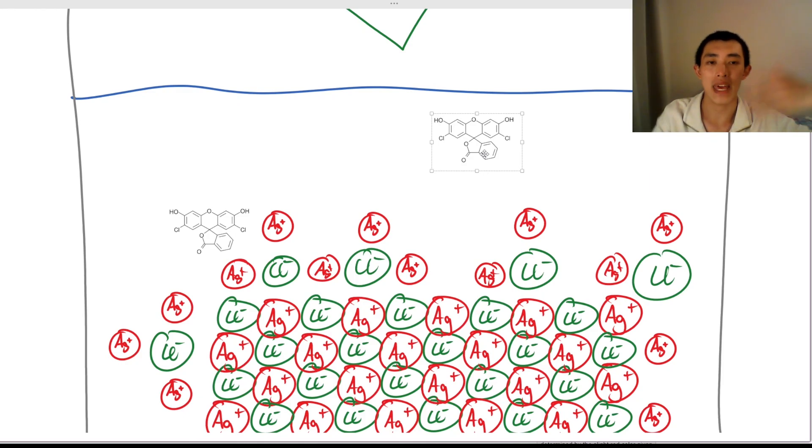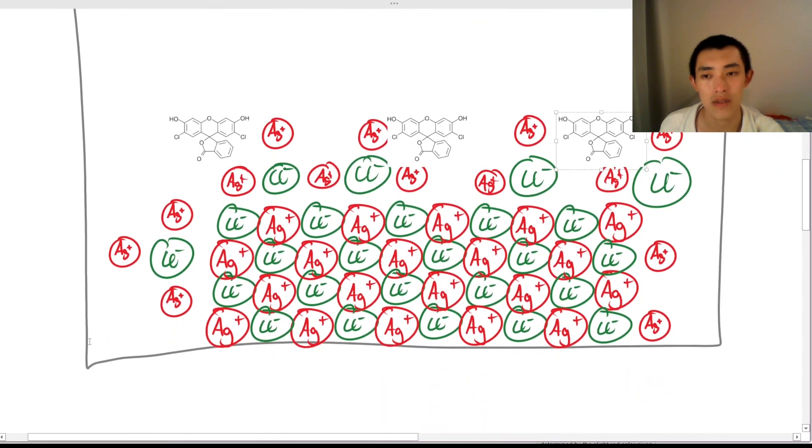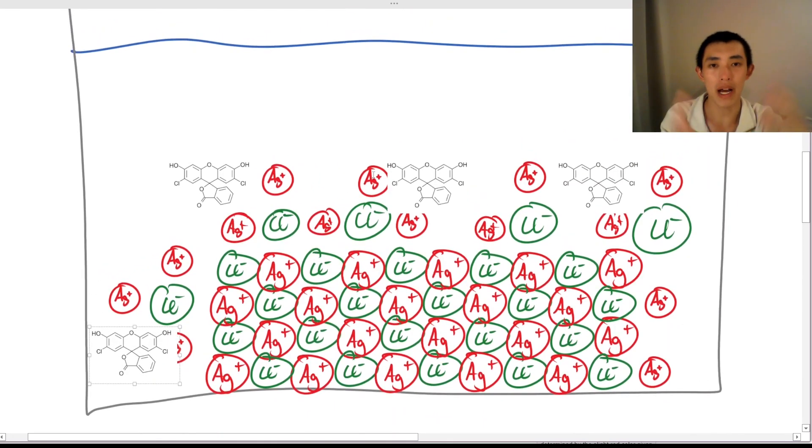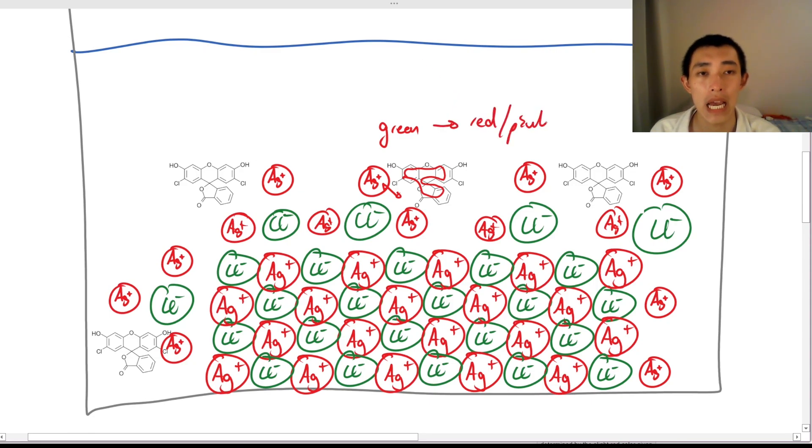But now that we have the excess silver, and the whole thing is covered with a positive charge, these guys get in on the action, like, wow, I love how positive it is. I love this. And so, they all kind of bind here. Now, as they bind to these silver particles, what happens is that it causes a conformational transformation in their body. And so, what that does is that it causes them to go from the natural color of green, so these guys are actually normally green, so the whole solution is going to be looking green, it's going to become red or pink. And that's when you say, okay, it's time to stop. And that is the Fajan method.